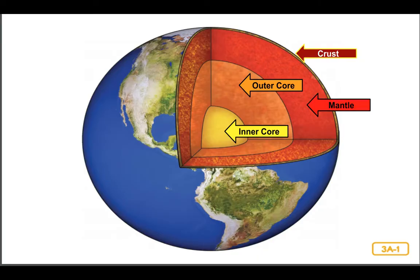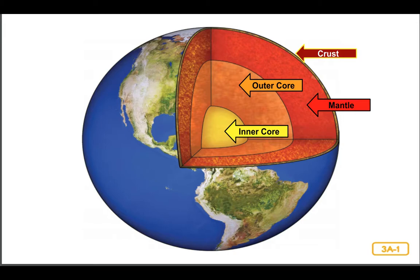The mantle surrounds the core, or center, of the Earth. The core has two parts: the inner core and the outer core. The inner core is a solid metal ball. The outer core is also metal, but it is not solid — it is made up of melted, or molten, metal. This means that deep down inside the Earth, thousands of miles beneath your feet, there is a giant sea of red, hot, molten metal surrounding a solid metal ball.